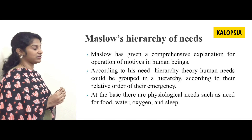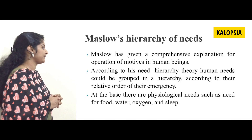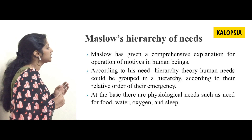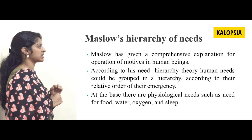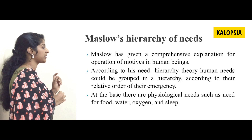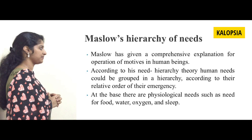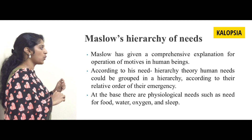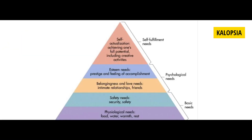The next theory is Maslow's hierarchy of needs. Maslow has given a comprehensive explanation for the operation of motives in human beings. According to this need hierarchy theory, human needs could be grouped in a hierarchy according to their relative order of emergence. At the base, there are physiological needs such as need for food, water, oxygen, and sleep. When these physiological needs are fulfilled, we get the safety needs such as security and safety. Safety needs and physiological needs together are known as basic needs.